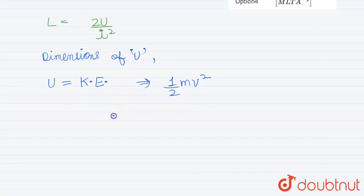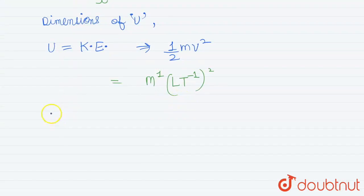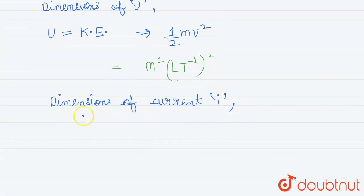So its dimensions will become m to the power 1, L T minus 1 whole to the power 2. And for current dimensions of current I, this will be, I has dimensions of A to the power 1.